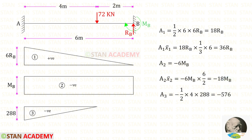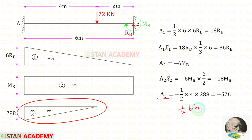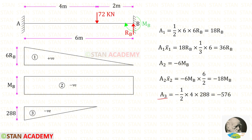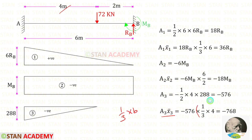Now let us find area 3 and x3̄. We know that it is a triangle. Here the breadth is 4 and the height is 288. For area 3 we get minus 576. To find the centroid distance towards the left, we use 1/3 × B. Here the breadth is 4, so 1/3 × 4. For area 3, x3̄, we get minus 768.